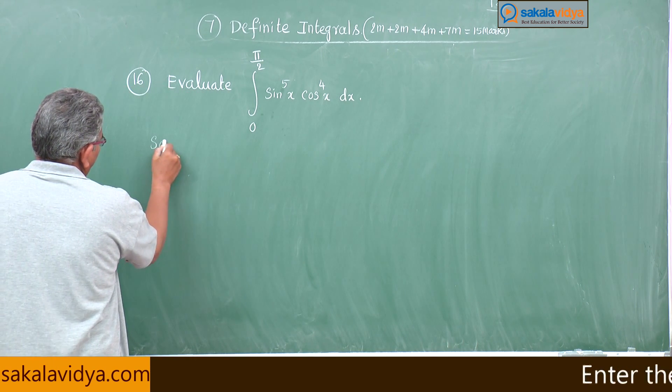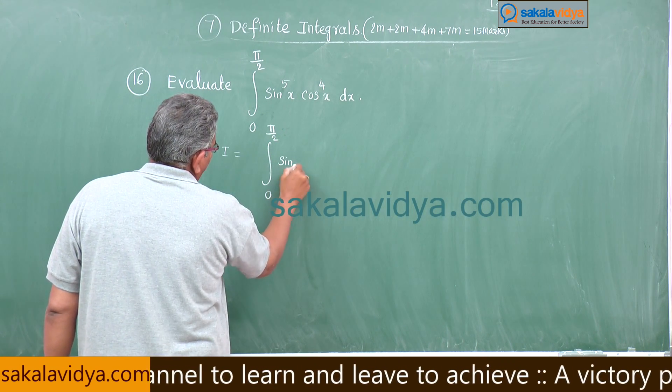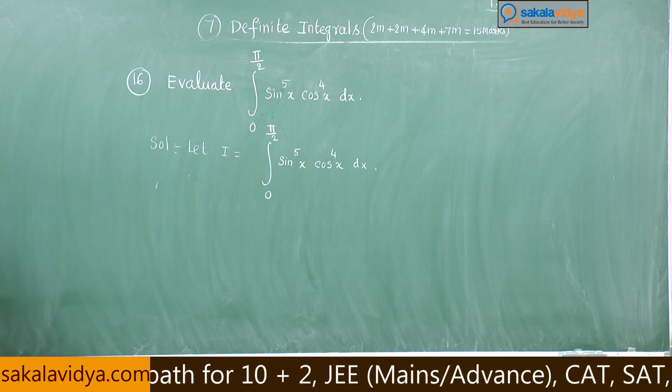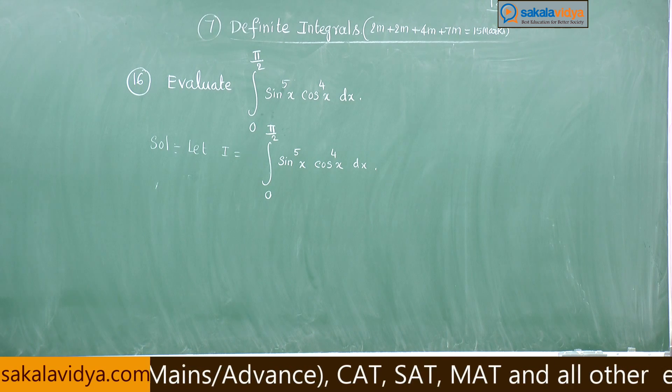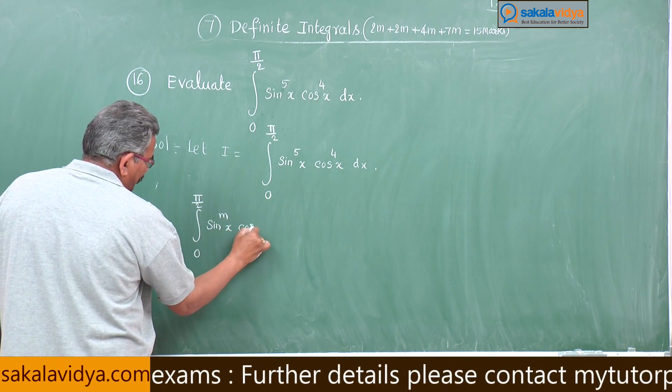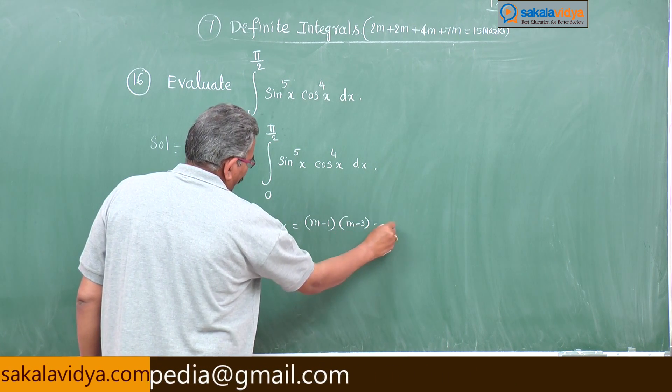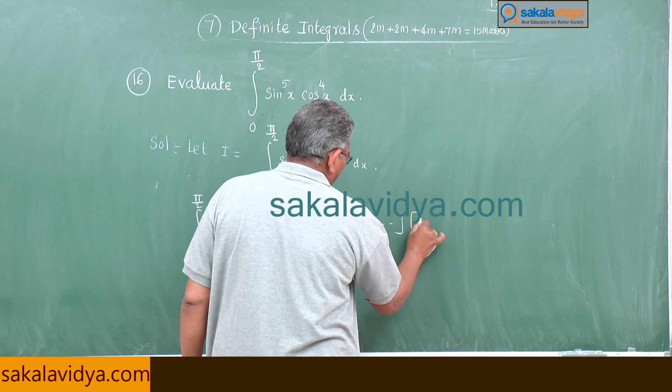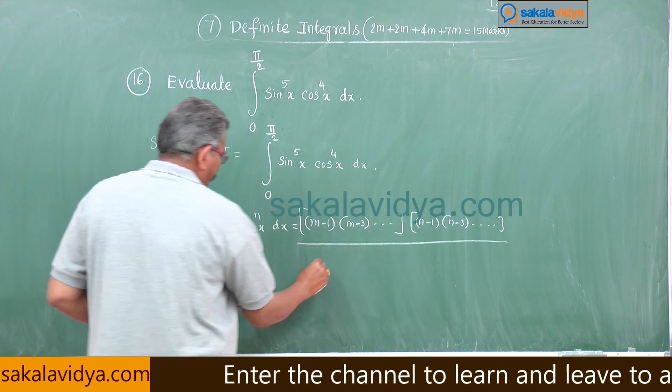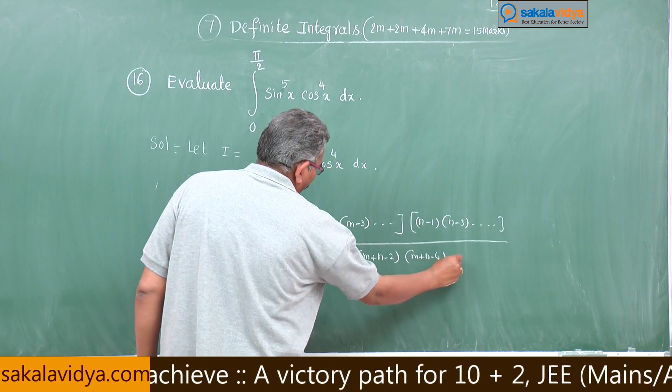Now let I equals integral 0 to pi by 2, sin x to the power of 5, cos x to the power of 4 dx. You have to remember the formula, that is very important. Integral 0 to pi by 2, sin x to the power of m, cos x to the power of n dx equals m minus 1, m minus 3, and so on, into n minus 1 into n minus 3 and so on.